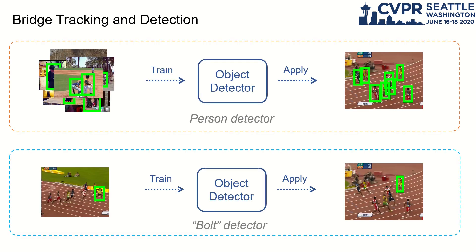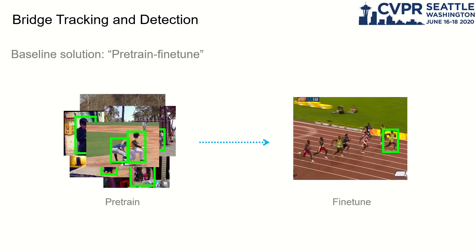The greatest challenge is the lack of training data. For object detection, the categories are predefined, so a large amount of data can be collected to train the detector. But in object tracking, the target is given by users. We cannot collect the training data in advance, which means that only one training image is used to train a detector.